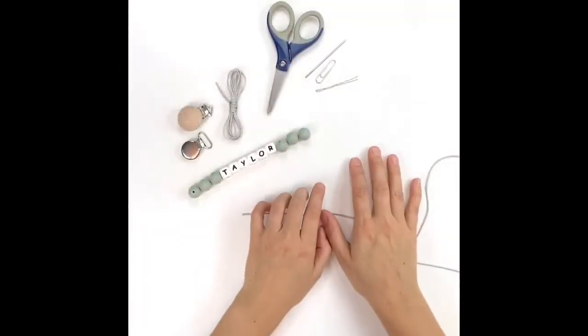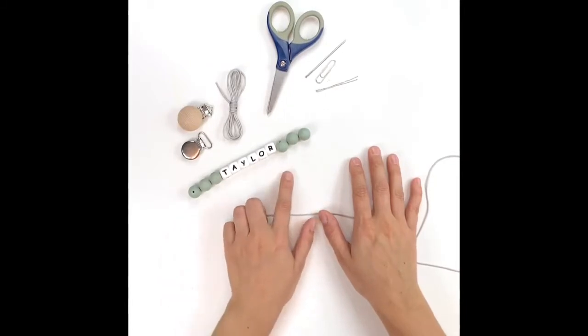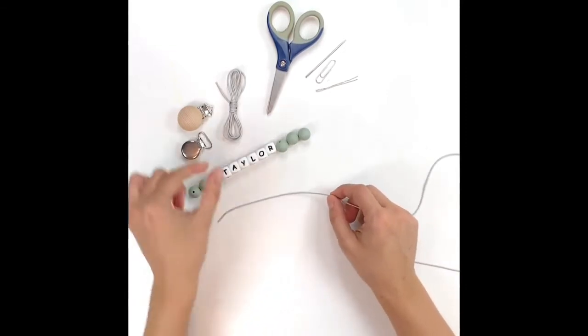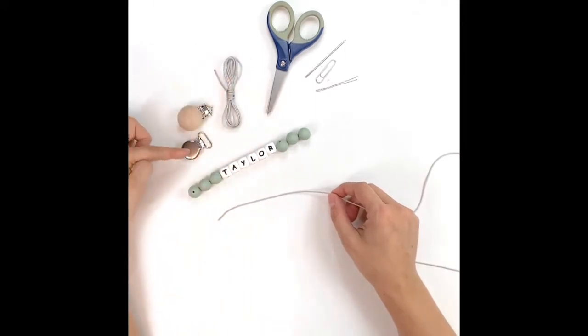Hi, today we're going to show you one way that you can make a beaded pacifier clip using some of our pacifier clip craft kits. In order to do that you will need nylon cord, a clip of some kind, some silicone or wood beads, as well as either a larger pin or a paper clip.